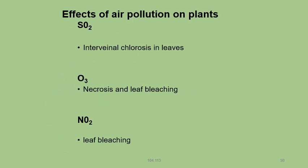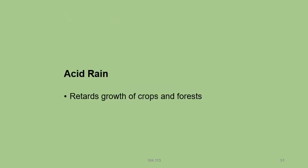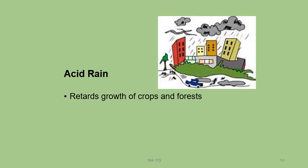Effects of air pollution on plants: SO2 present in the air causes interveinal chlorosis in leaves. Ozone causes necrosis and leaf bleaching. NO2 causes leaf bleaching. Acid rain retards the growth of crops and forests.